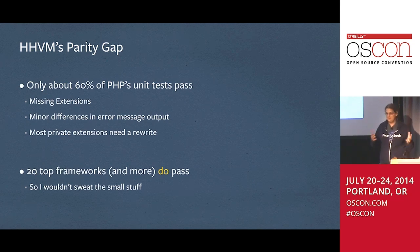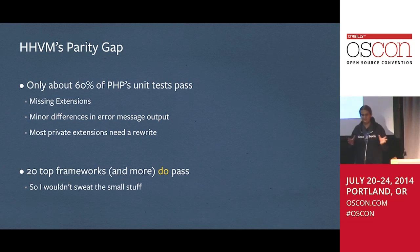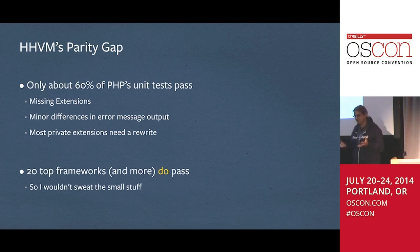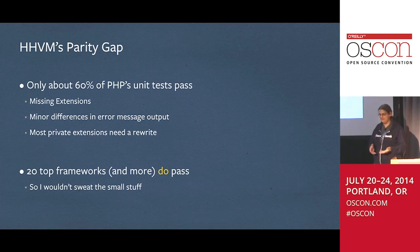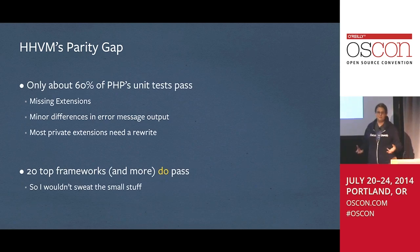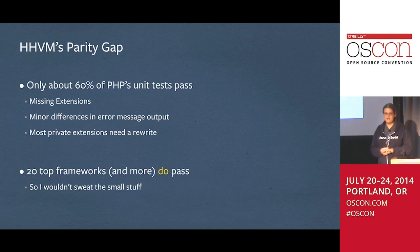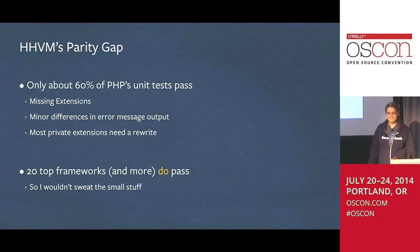Does that mean HHVM can run all your code? Not necessarily. We run about 60% of PHP's unit tests, which is not bad. But it turns out that 40% gap is mostly stuff people don't care about — things like an error message having a verb in a different position. The top frameworks people actually use — Symfony, Cake, Drupal — are running just fine on HHVM because we've prioritized the features people actually use.